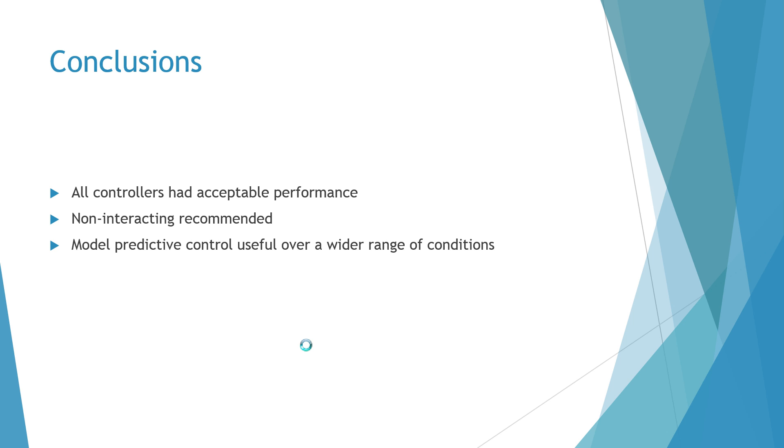In conclusion, we found that all controllers had acceptable performance in reaching the set point when changes were small. Based on this, we would recommend non-interacting because it's the simplest to implement. However, if using a wider range of conditions, we would recommend model predictive control because it's the most accurate.